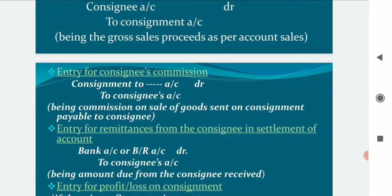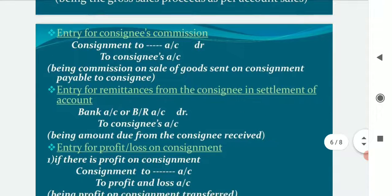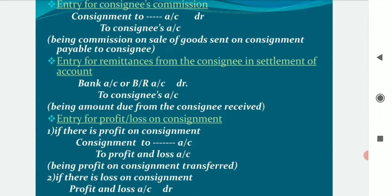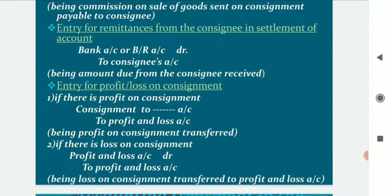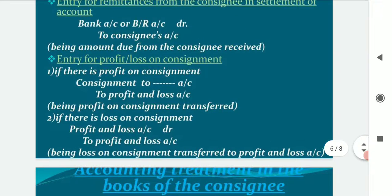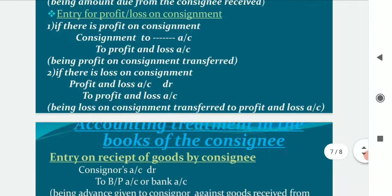Entry for amount received from the consignee in settlement: Bank Account Dr. to Consignee Account. Entry for Profit on Consignment: Consignment Account Dr. to Profit and Loss Account — profit on consignment transferred. Entry for Loss on Consignment: Profit and Loss Account Dr. to Consignment Account — loss on consignment transferred to Profit and Loss Account.